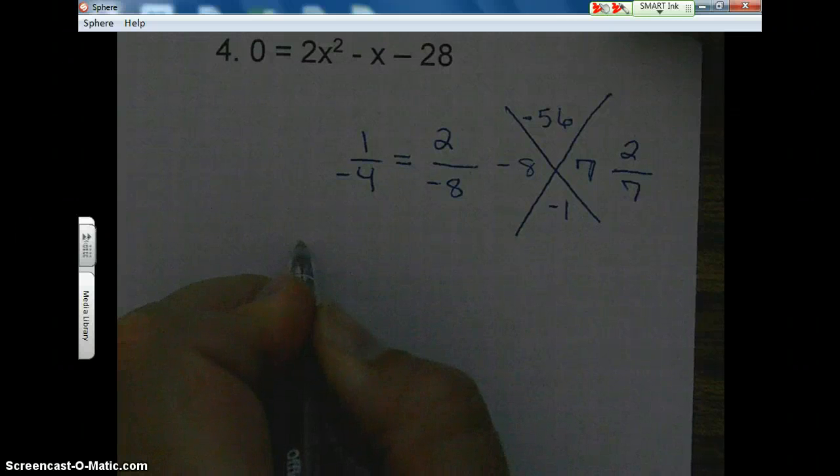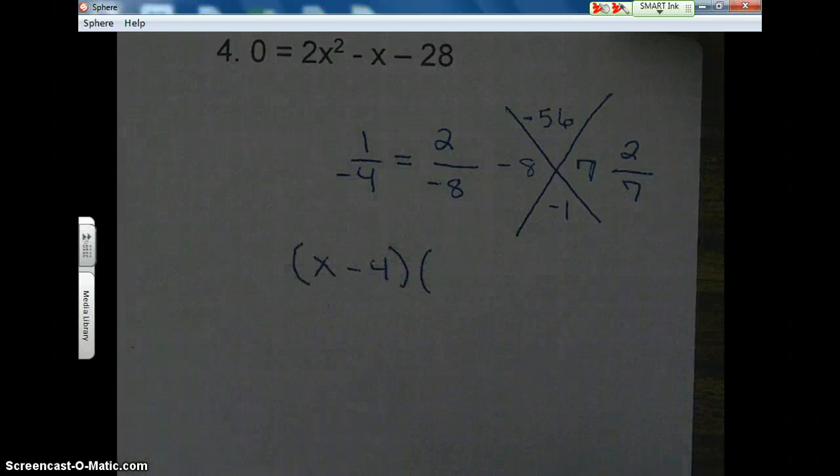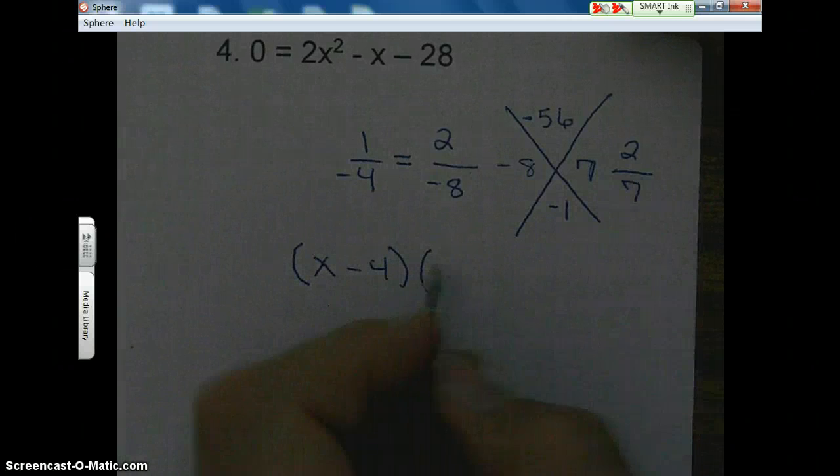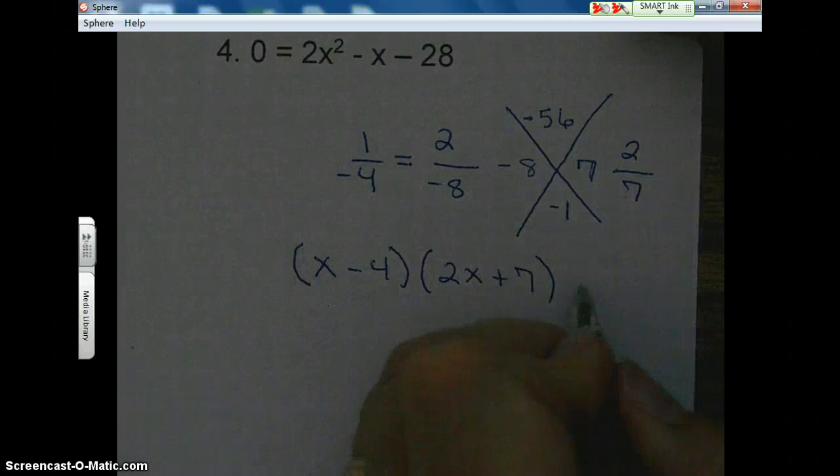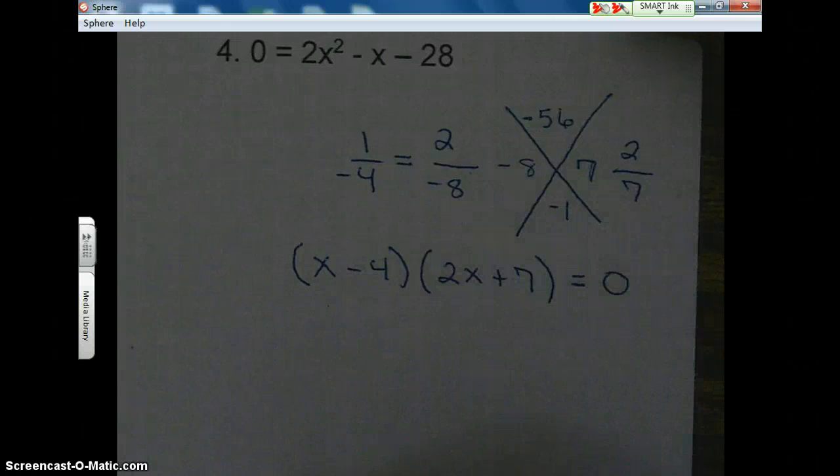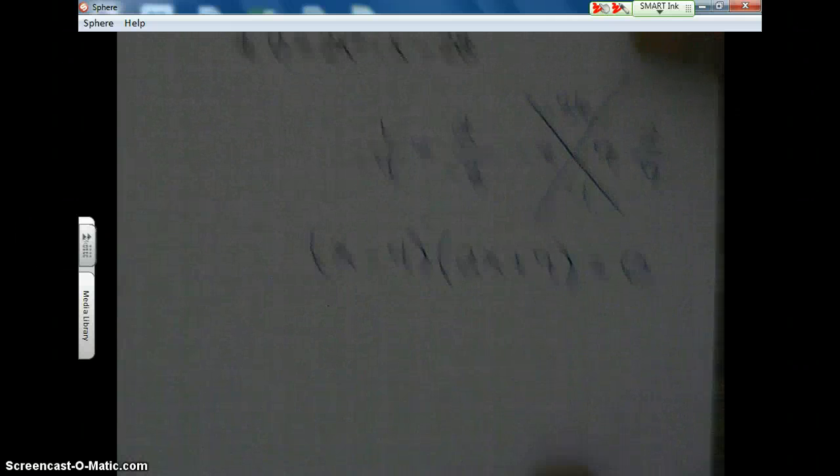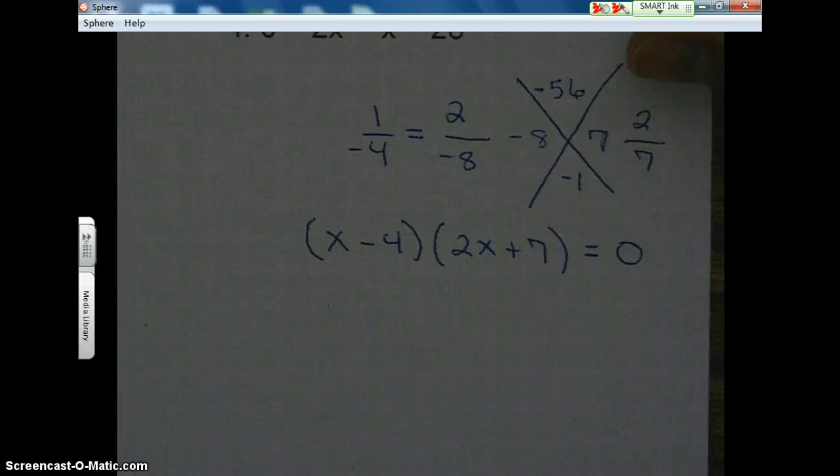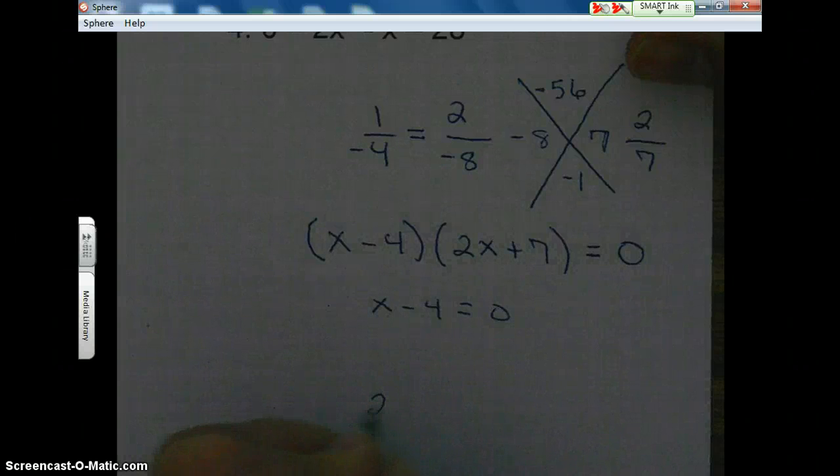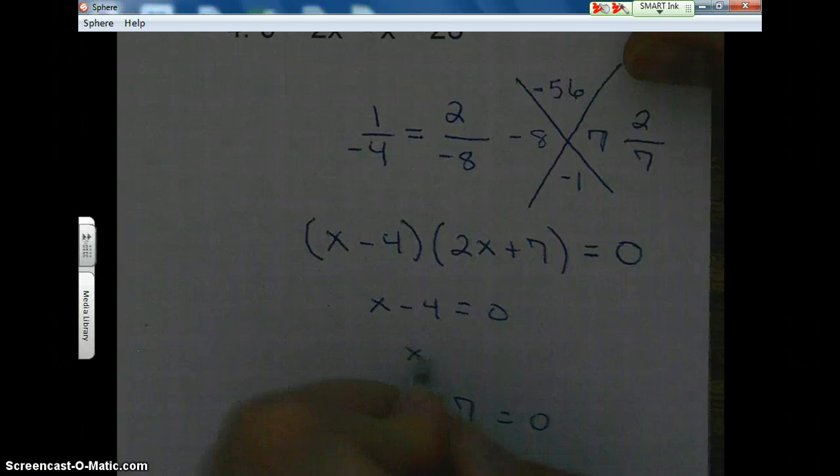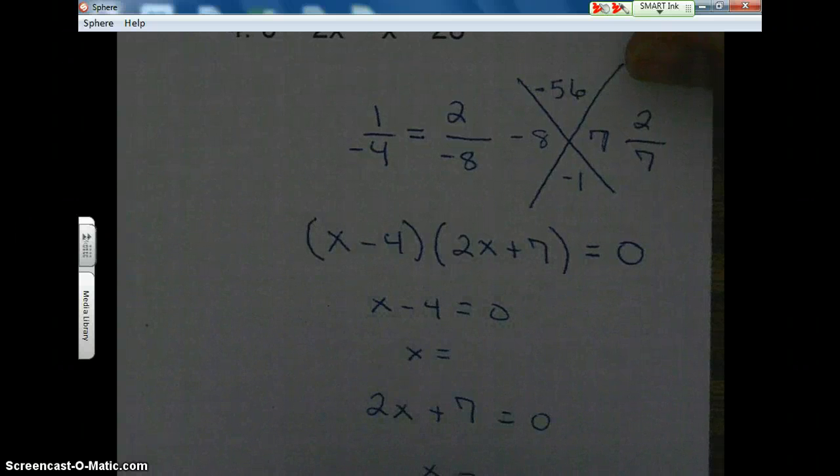So we have 1x minus 4. We have 2x plus 7. And we're going to set this equal to zero because this was equal to zero up above. Okay, now we're ready to solve. So set each factor equal to zero. And solve. What is x equal? What does x equal? Well, please find those answers out for tomorrow.